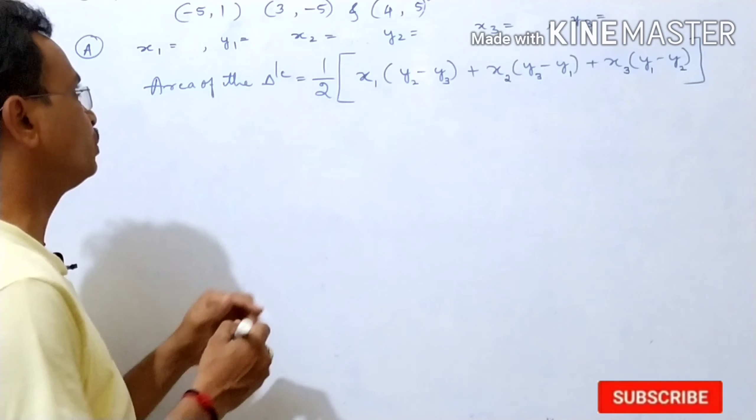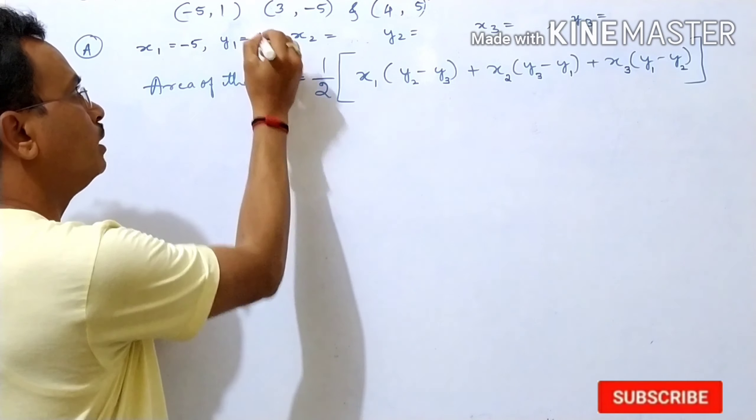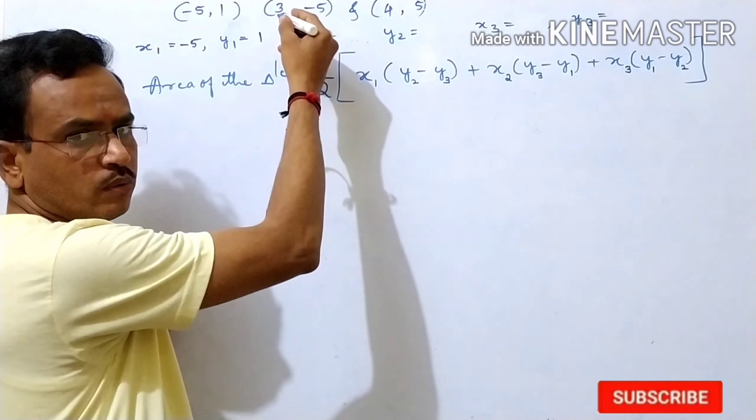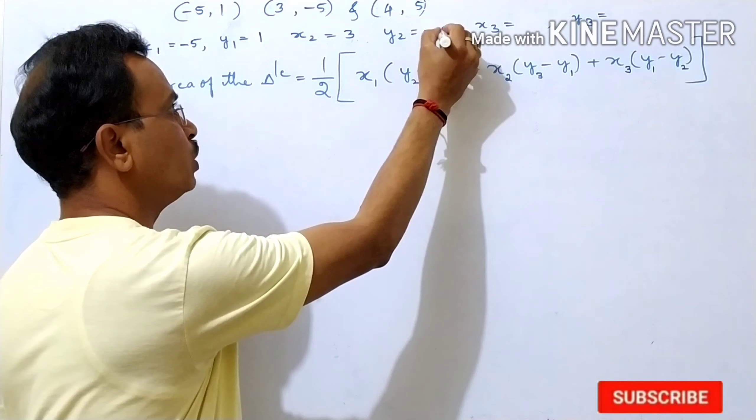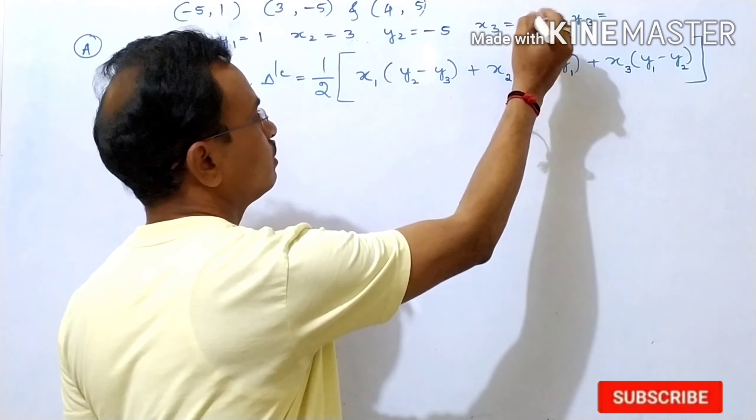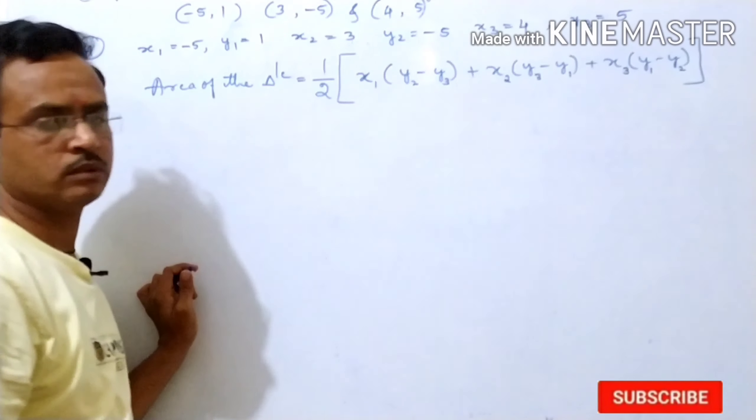Here x1 what we should take? Minus 5. y1 is 1. x2 what is given here? 3 and y2 minus 5. x3 is 4, y3 we should take 5.